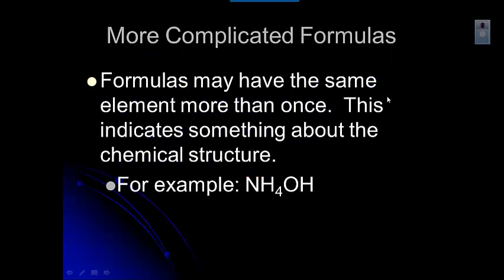Sometimes formulas have the same element appearing more than once, and this tells us something about the structure of the compound. When that happens, you add those subscripts together. For example, if hydrogen appears twice, you add them. So you'd have one nitrogen, four plus one equals five hydrogens, and one oxygen in that formula.